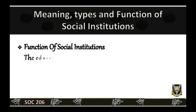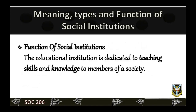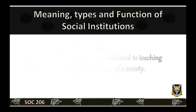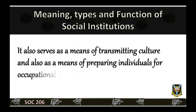Functions of social institutions. You have read a little about some functions the family and economic institutions perform. We will now touch on the functions of the other four social institutions. The educational institution is dedicated to teaching skills and knowledge to members of a society. It also serves as a means of transmitting culture, preparing individuals for occupational roles, and socializing the members of a society.